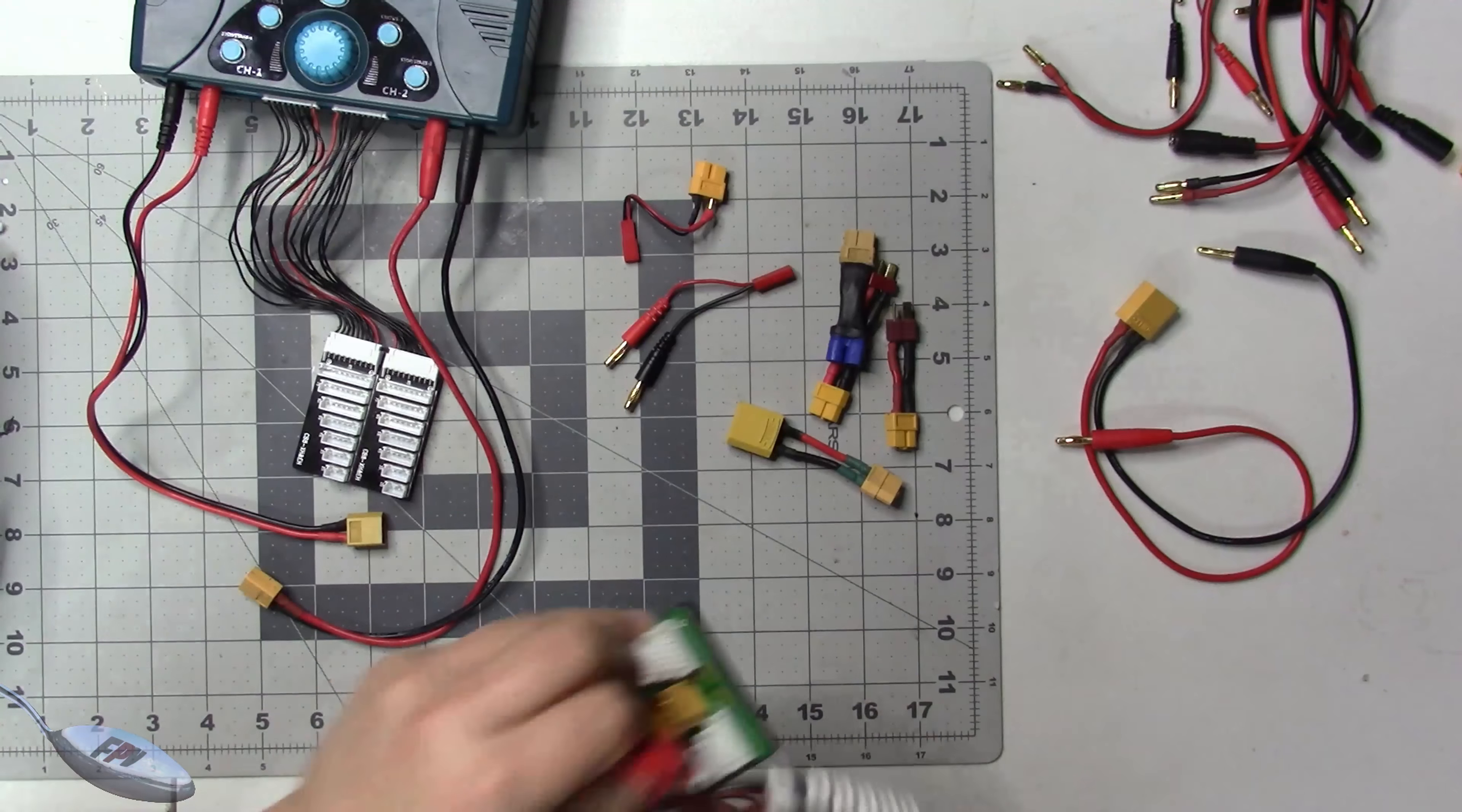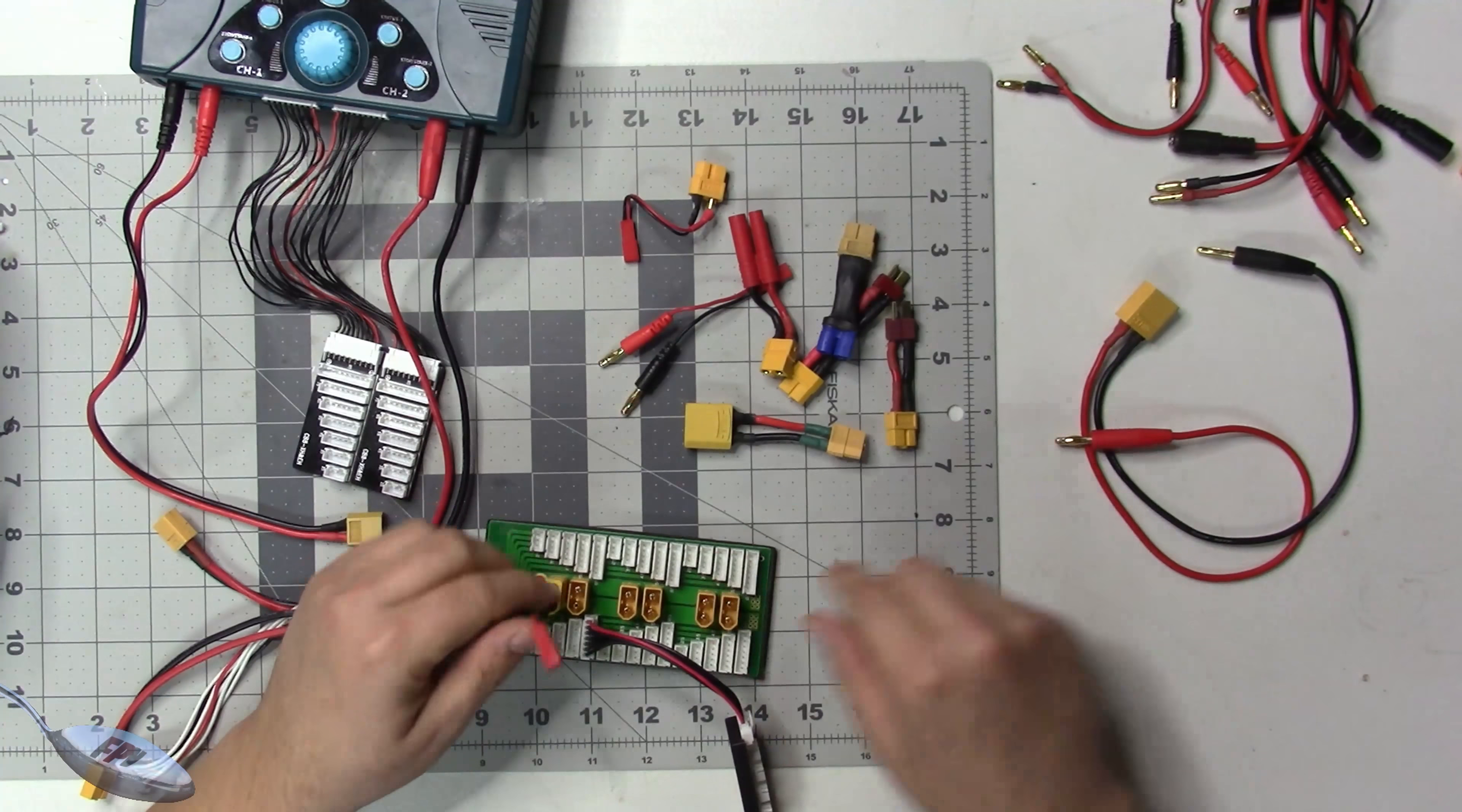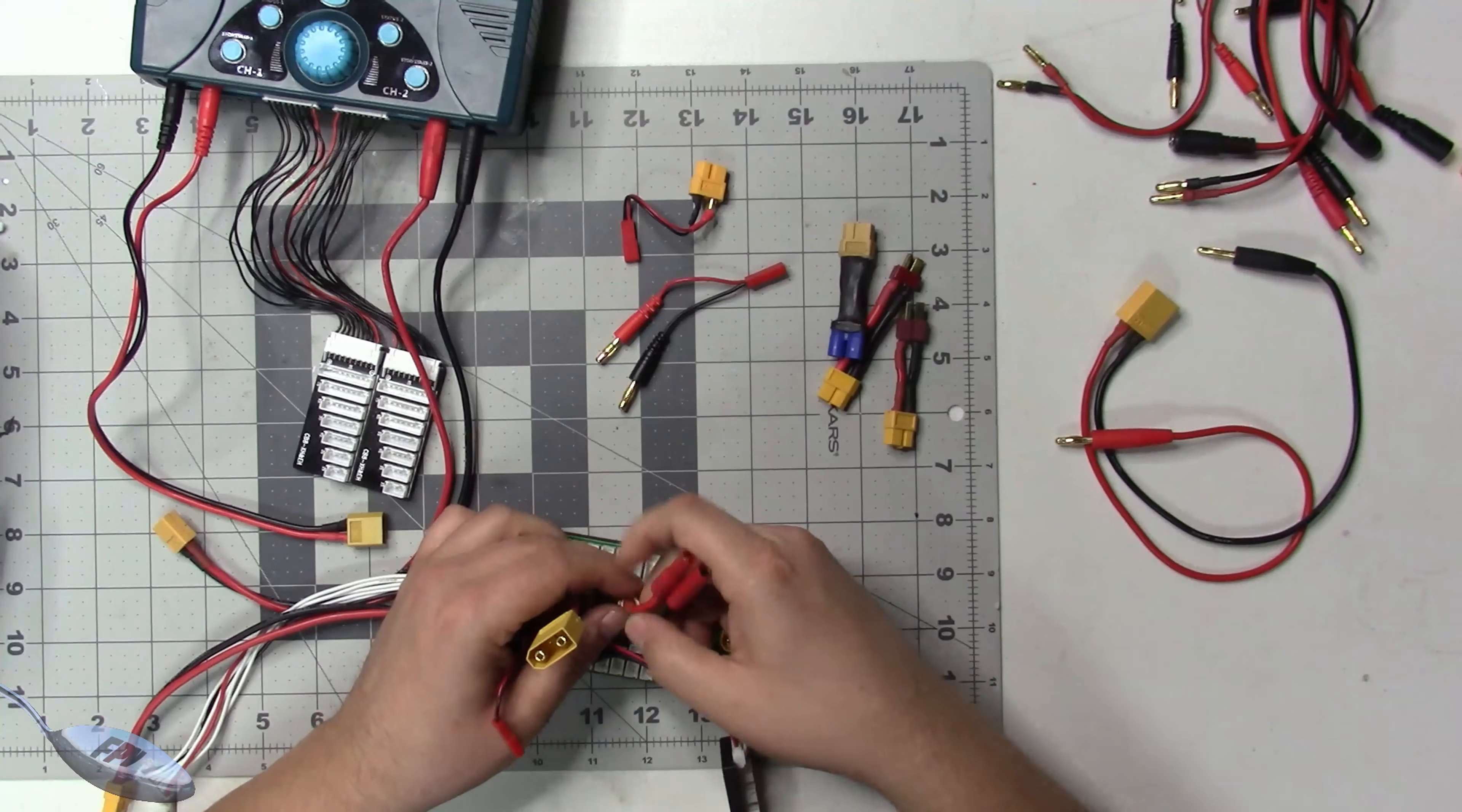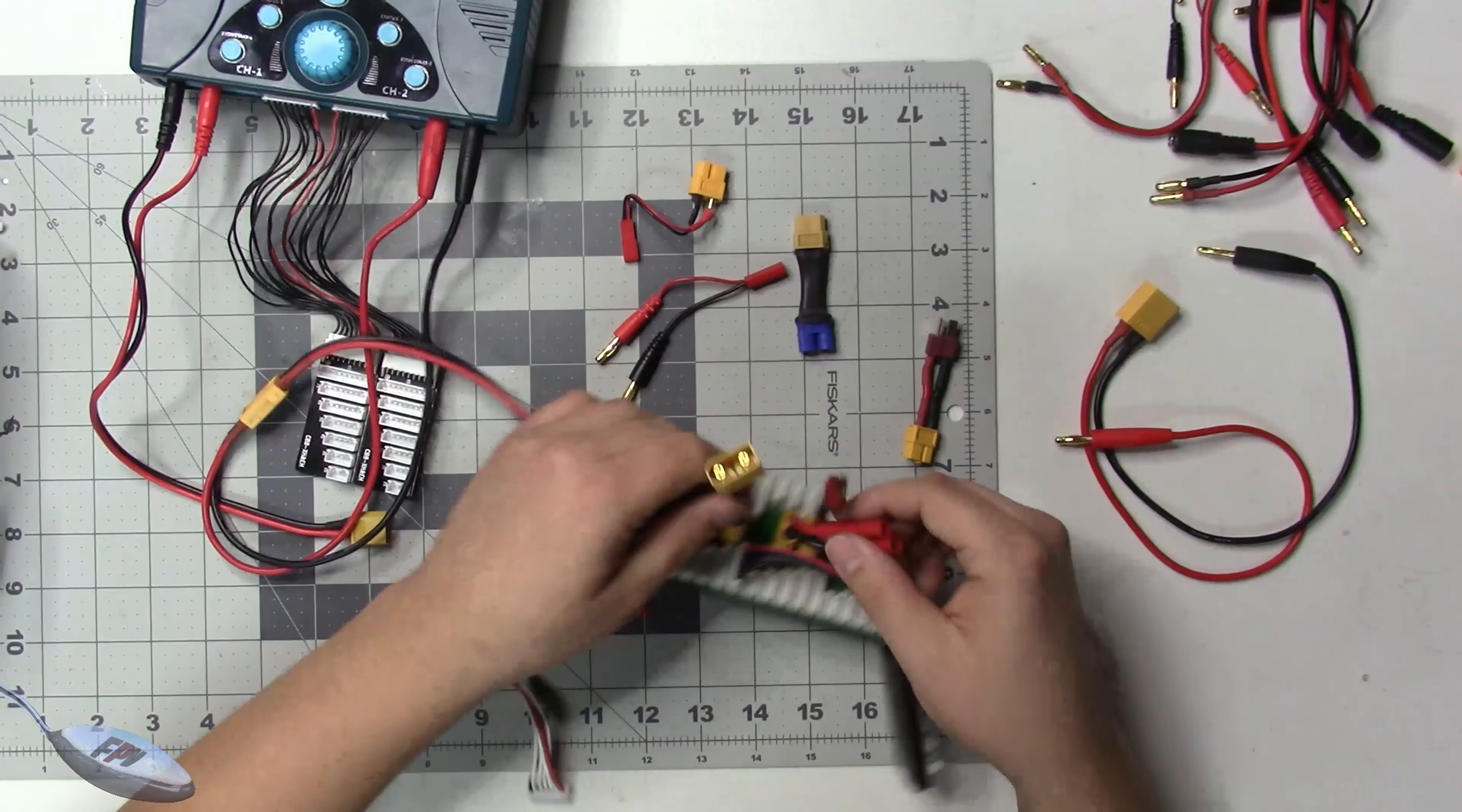Let me grab my parallel pack. Again, more adapters for different charging styles. You can actually just plug all these into your parallel board if you want to charge one at a time. You can have all your different charging accessories plugged directly into again XT60 on this.